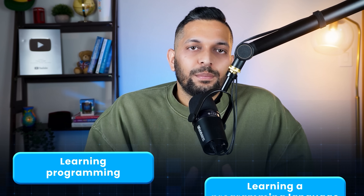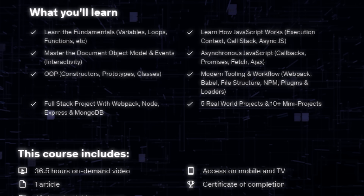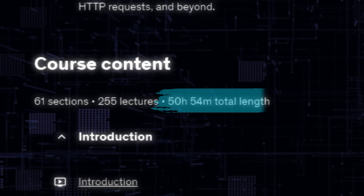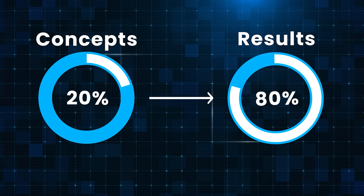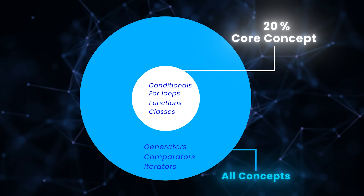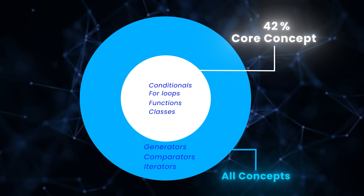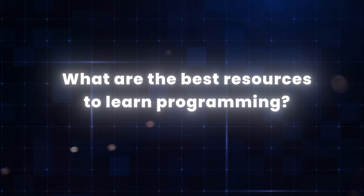Learning programming and learning a programming language are two different things. When I was a beginner, I didn't understand this, so I kept doing 30-40 hour programming tutorials again and again, giving me a false sense of progress. Experts call this phase 'tutorial hell.' If you follow the 80-20 rule, you will not get stuck in tutorial hell. We will slowly expand that inner circle over time — but for now, focus on finding the best resources to learn those 20% core concepts.